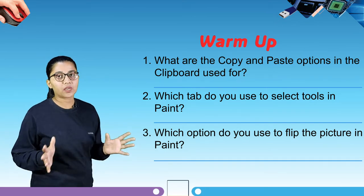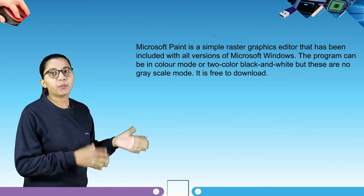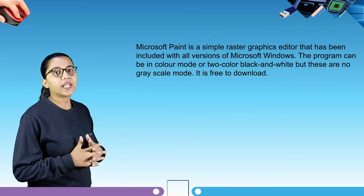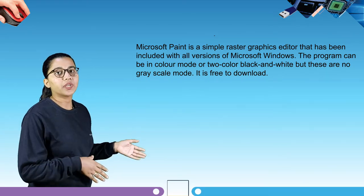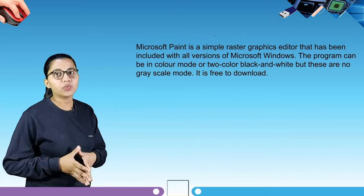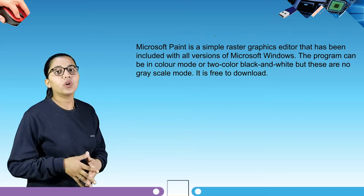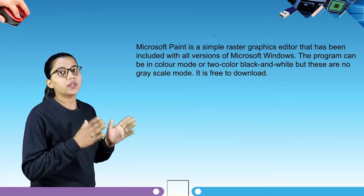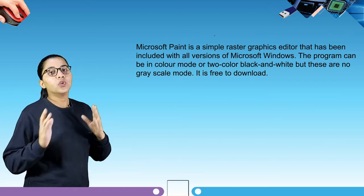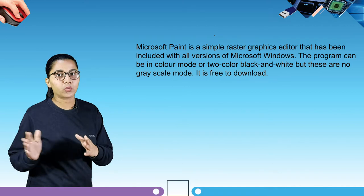So let's start our chapter. Microsoft Paint is a simple raster graphic editor that has been included with all versions of Microsoft Windows. The program can be in color mode or two-color black and white, but there is no gray scale mode. It is free to download.